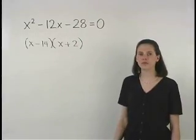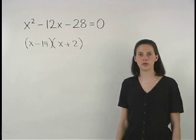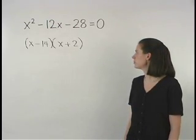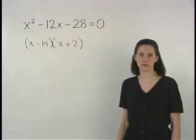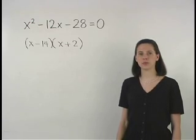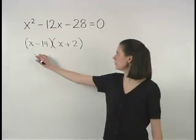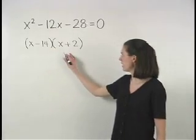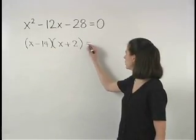If you need a review of how to factor a trinomial, like x squared minus 12x minus 28, go back to the previous section. So we have x minus 14 times x plus 2 equals zero.